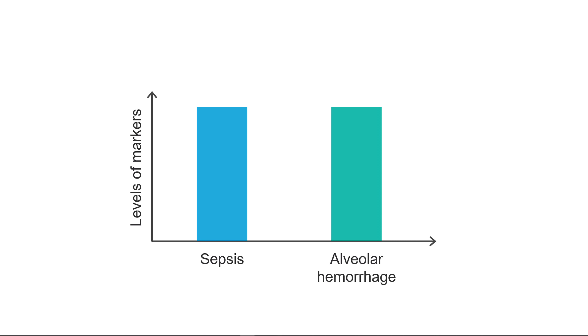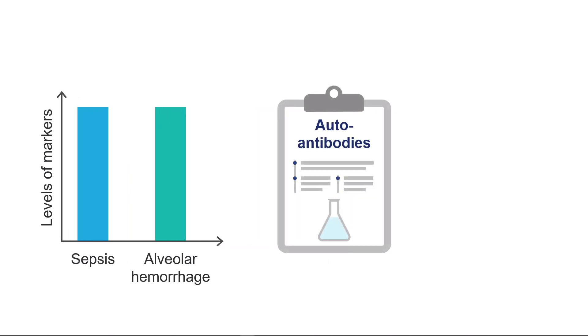A critically ill patient with sepsis will have equally elevated levels compared to patients with autoimmune diffuse alveolar hemorrhage. Thus, we must rely on more specific autoantibodies in combination with complement levels.